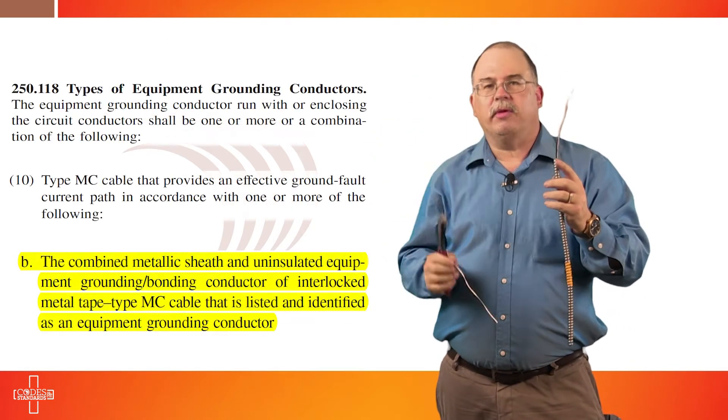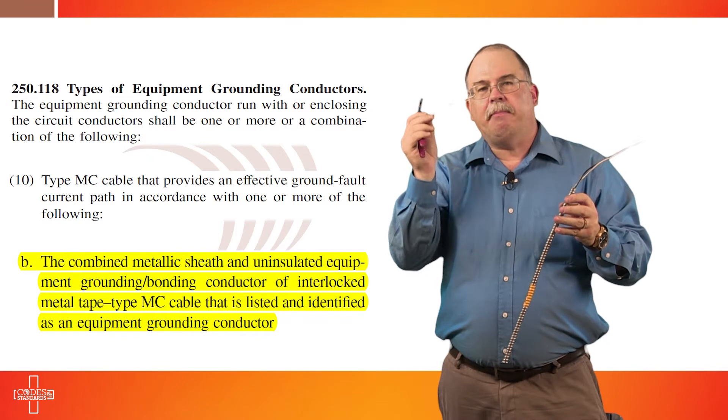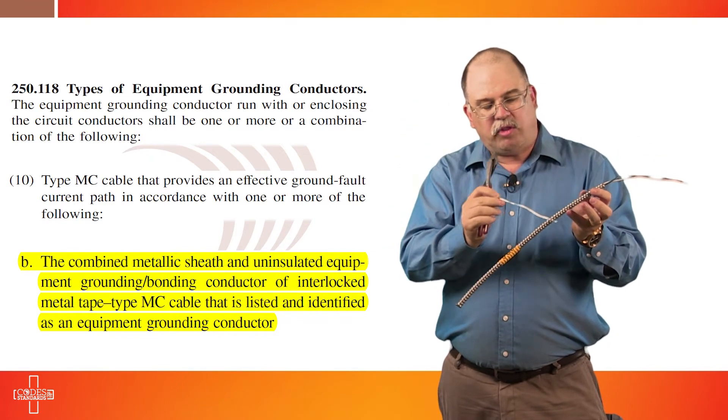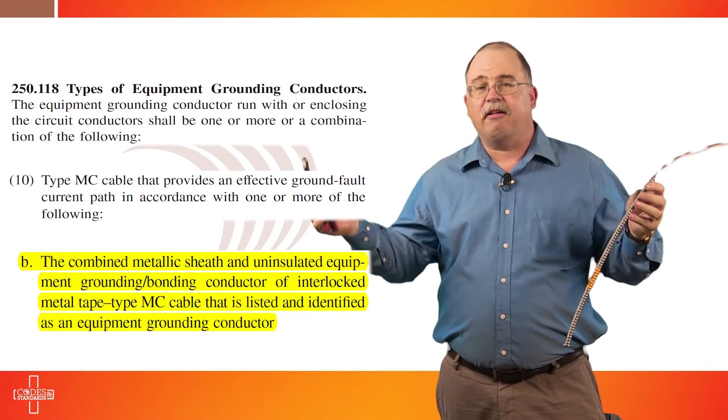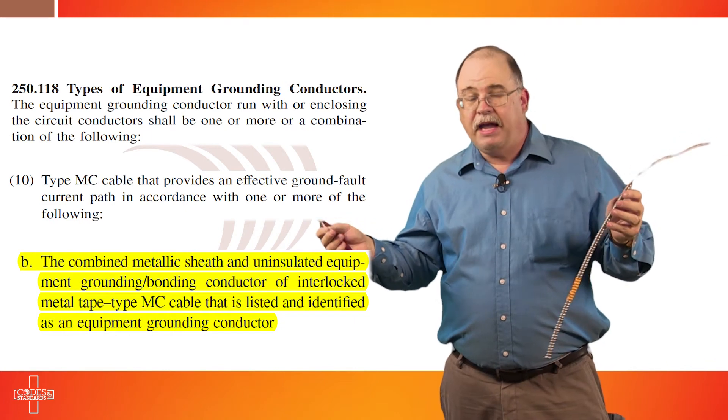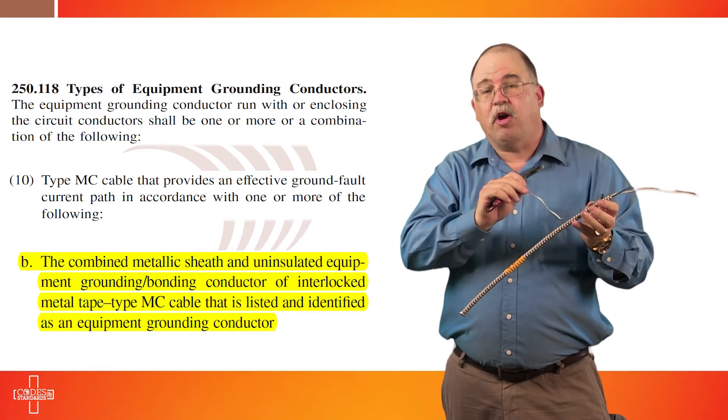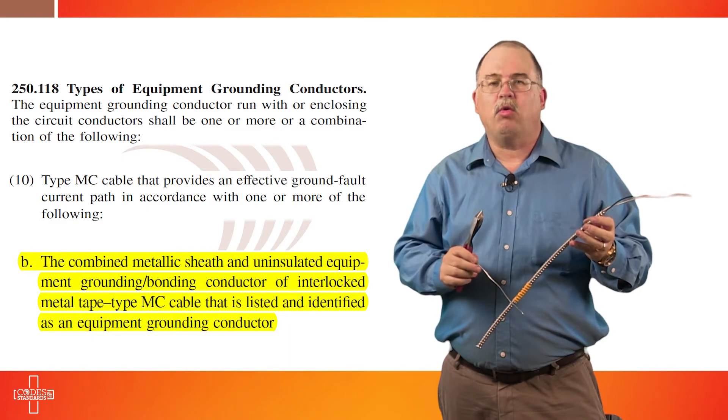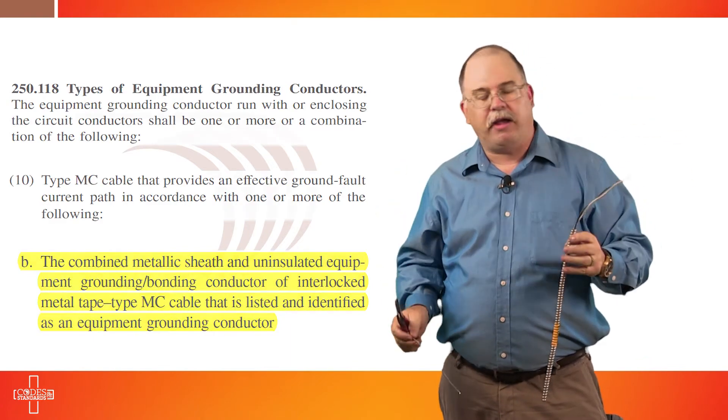The aluminum grounding and bonding conductor makes intimate contact with all of the convolutions through the entire length of the cable. In that way it is now an effective ground fault current path and will serve as an equipment grounding conductor in this type of product.